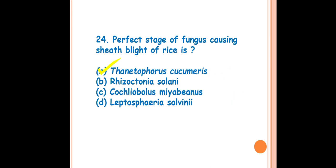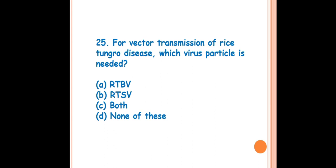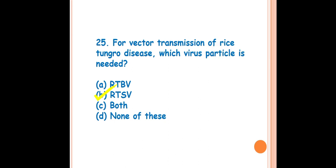Question 25: For vector transmission of rice tungro disease, which virus particle is needed? The answer is RTSV — rice tungro spherical virus. Rice tungro disease is caused by two virus particles: rice tungro bacilliform virus (RTBV) and rice tungro spherical virus (RTSV). RTBV is mainly responsible for producing the maximum symptoms, whereas RTSV is needed for vector transmission through the insect vector Nephotettix virescens, transmitted in a semi-persistent manner.